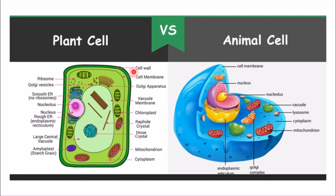First of all, we have a cell wall which is present, and then we have a cell membrane. The main difference between the plant cell and the animal cell is that in the animal cell, we do not have a cell wall — the cell wall is absent. But in the plant cell, the cell wall is present. Cell membrane is present in both plant cell and animal cell.